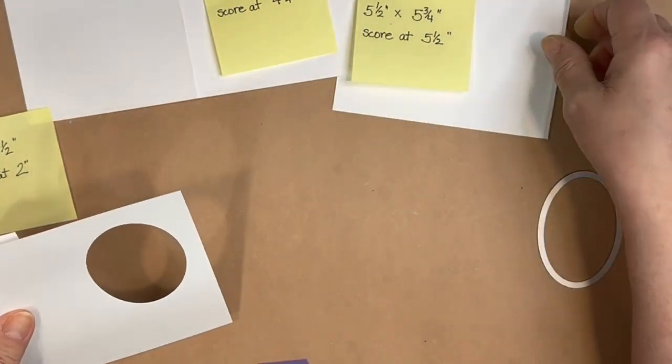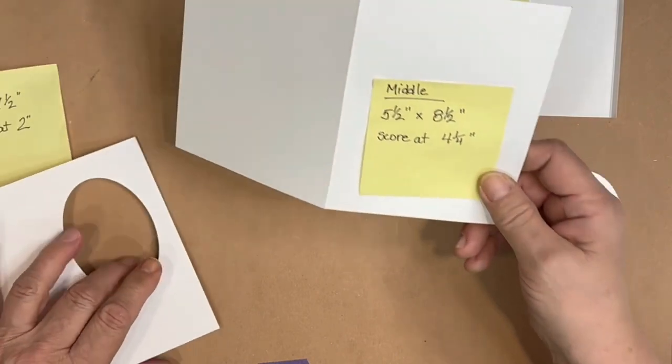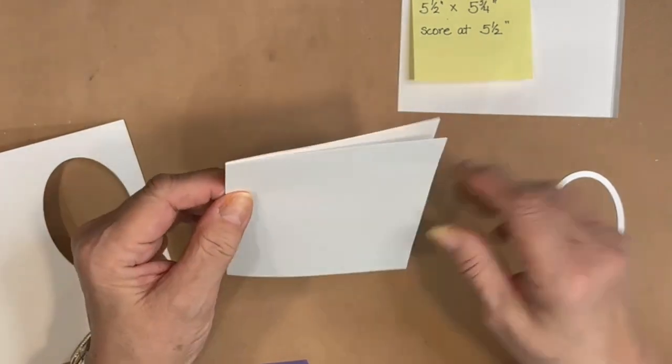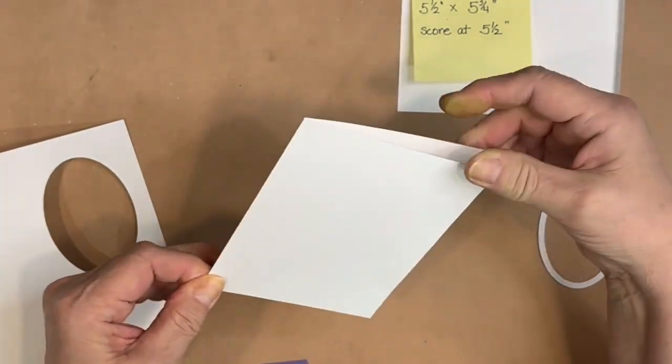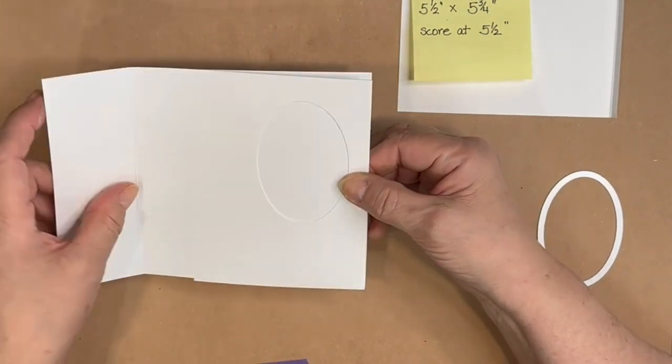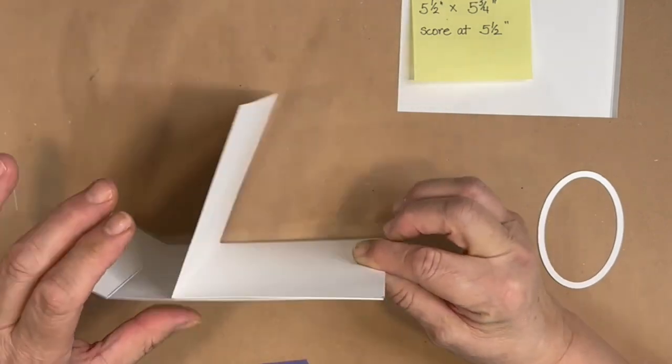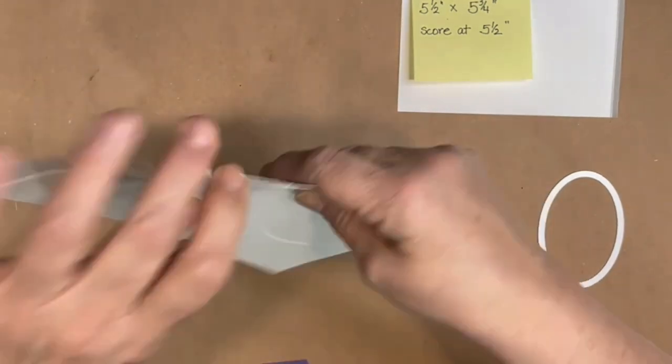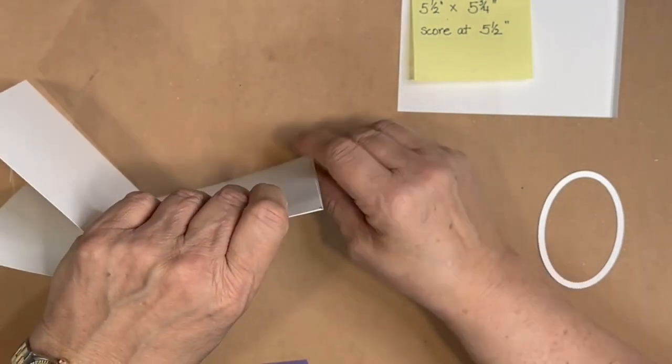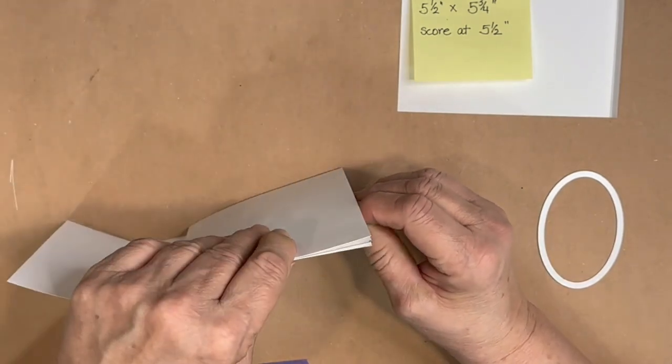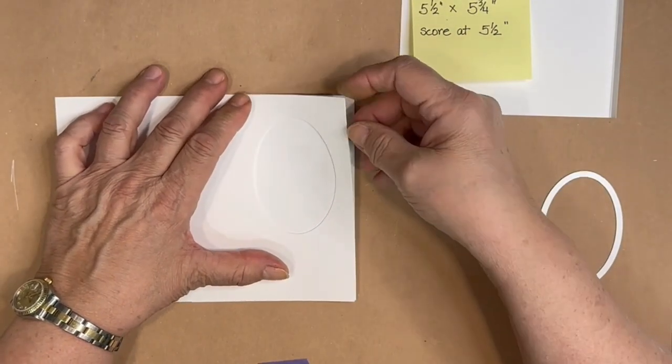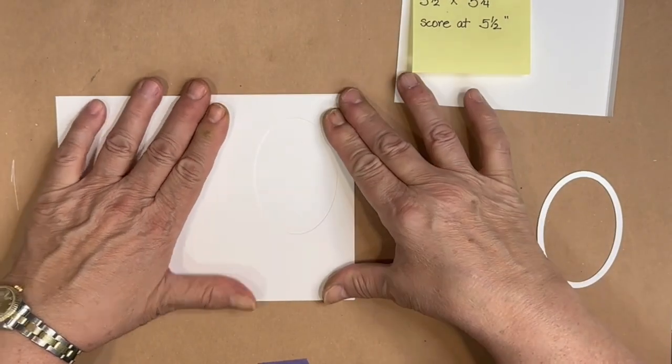The next thing I want to do is take the piece that's going to be the middle of my card, which I've scored and burnished, and I'm going to place this inside the front of the card, and I can open it up like so. And I want to make sure that it's all centered nicely. Now I'm going to close that inside of the card.